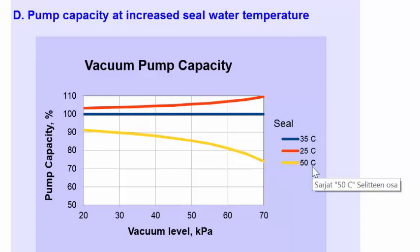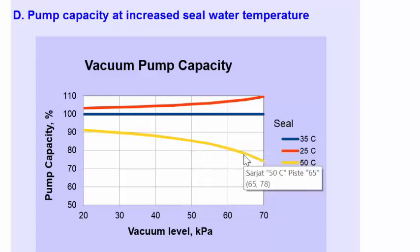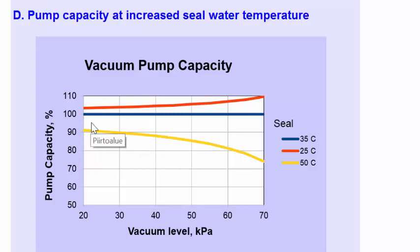If we look at the yellow curve and the situation where seal water temperature is 50 degrees Celsius — this can occur in some mills when sealing water is circulated through a cooling tower and there are problems causing insufficient cooling — the temperature of seal water can increase up to 50 degrees. In this situation, at a vacuum level of 50 kilopascal, we can see that the pump capacity is about 85% compared to normal running conditions. The capacity decreases more the higher the vacuum is. At lower vacuum levels, the effect of temperature on pump capacity is smaller.